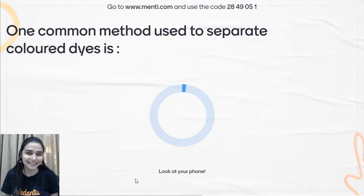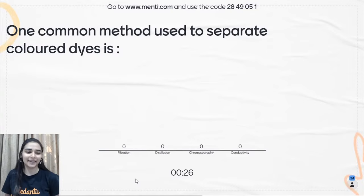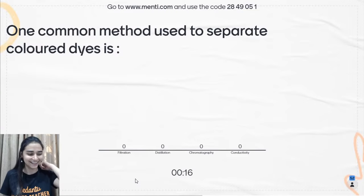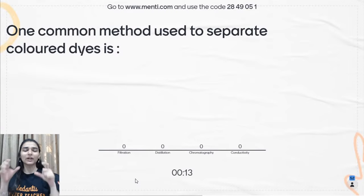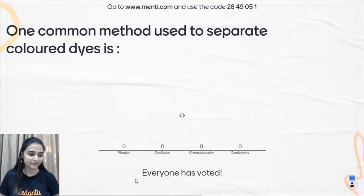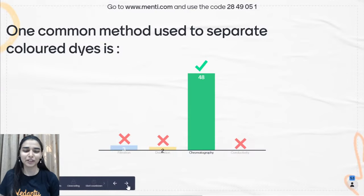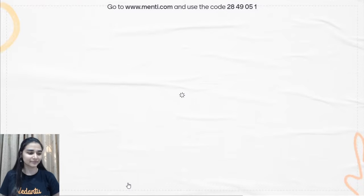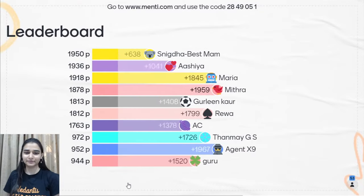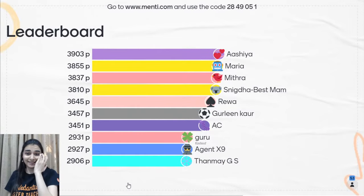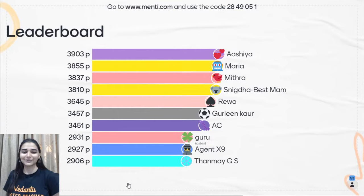Fourth question: one common method used to separate a colored dye — options are filtration, distillation, chromatography, or conductivity. The answer is chromatography — chroma means color, and it's used to separate colored components.